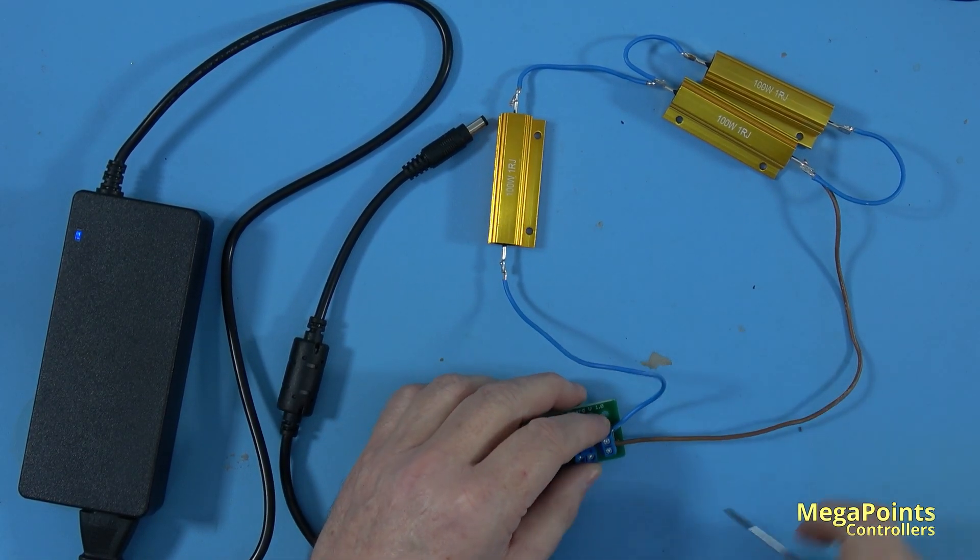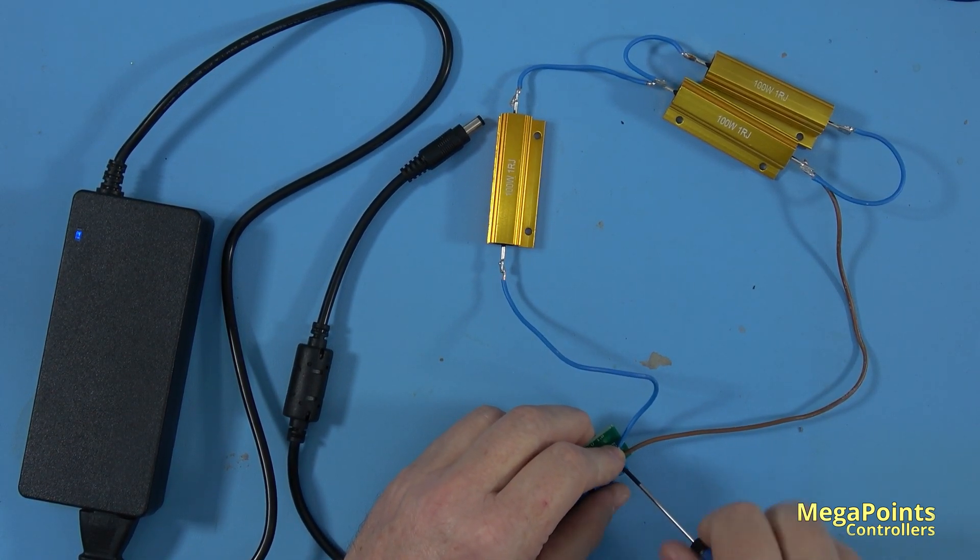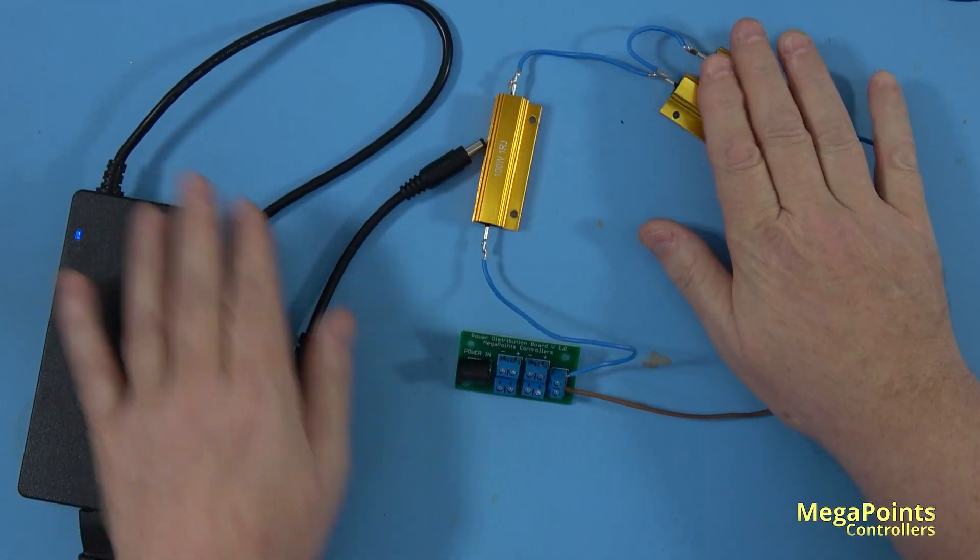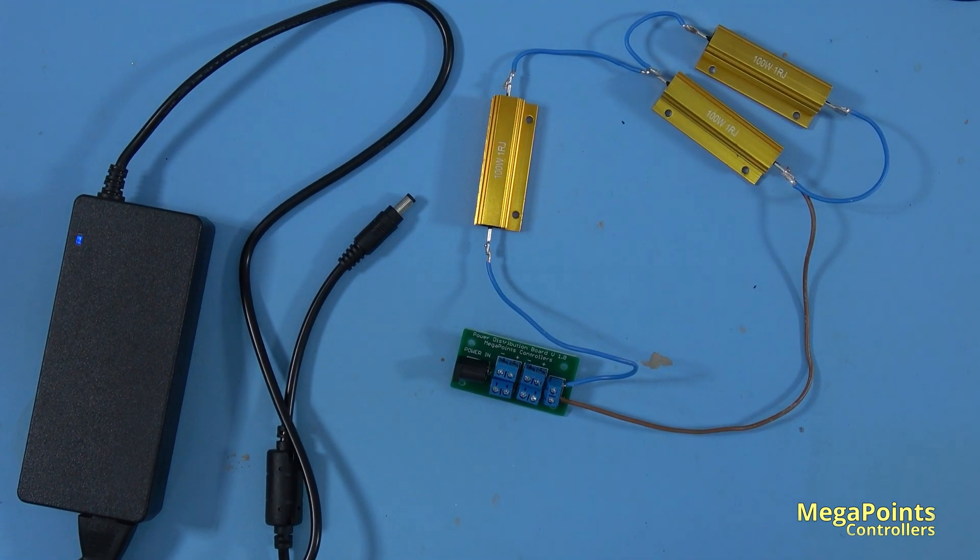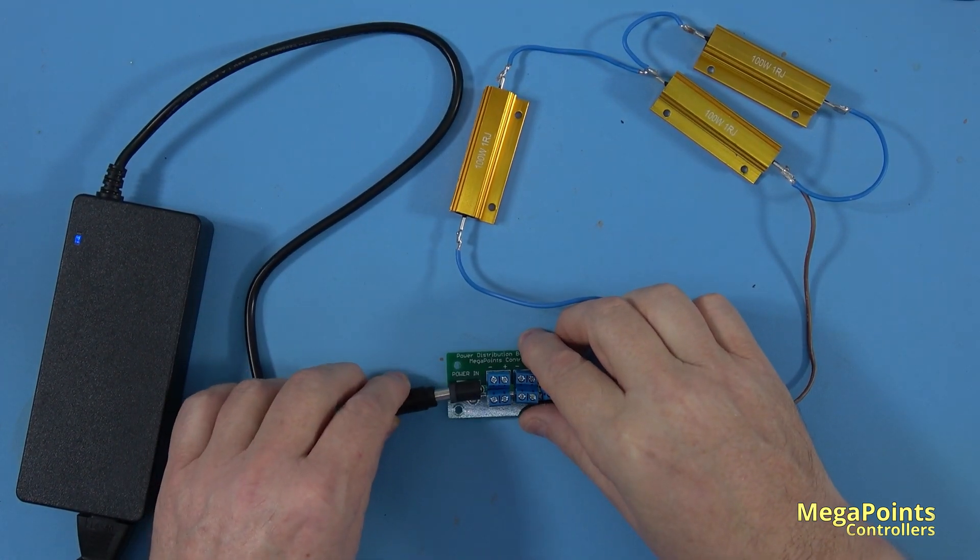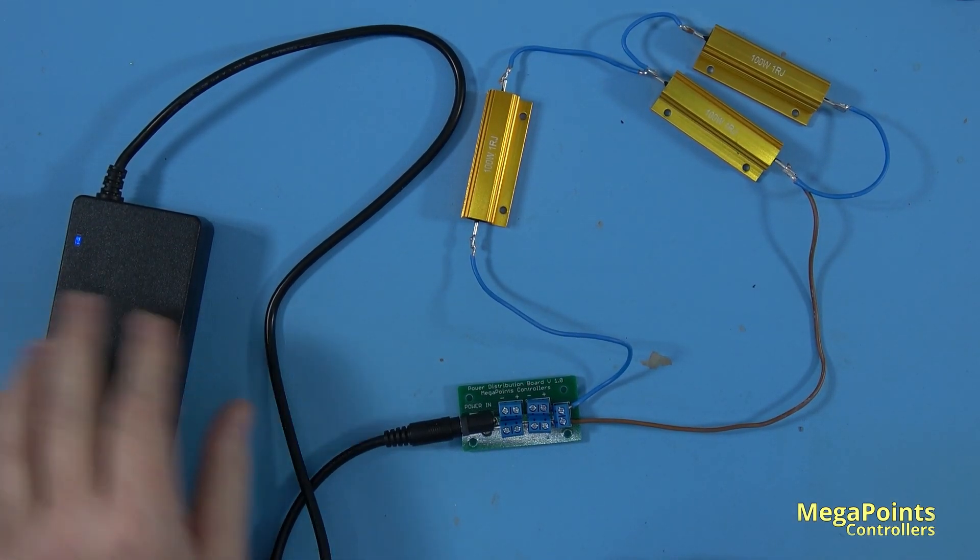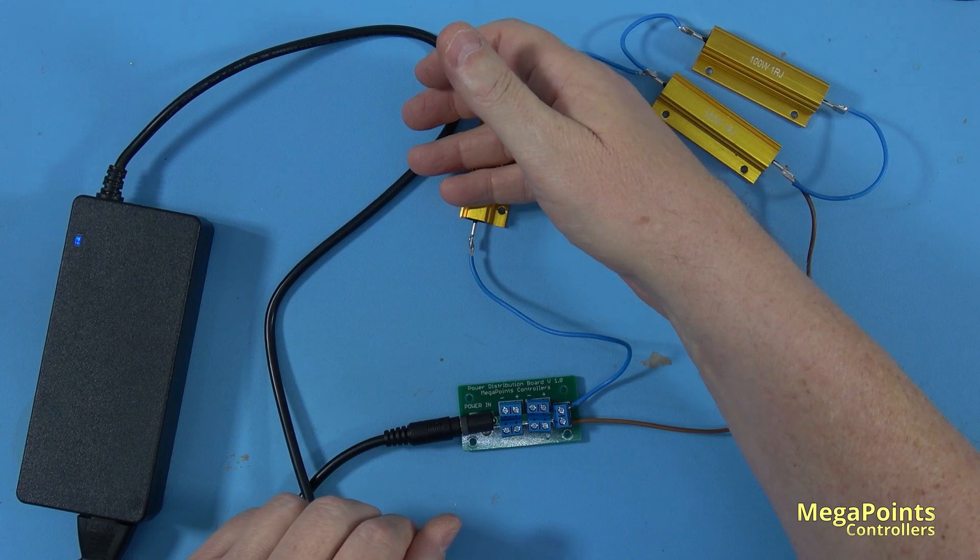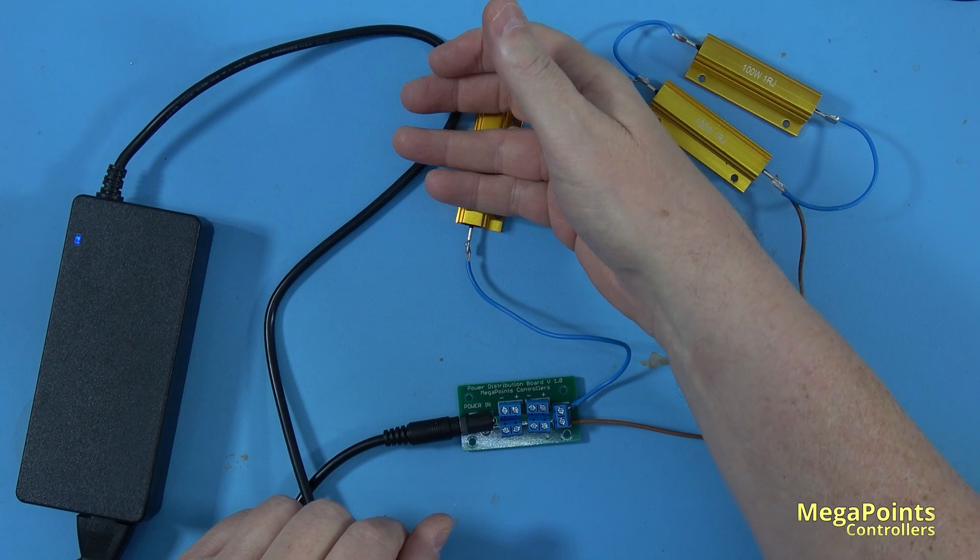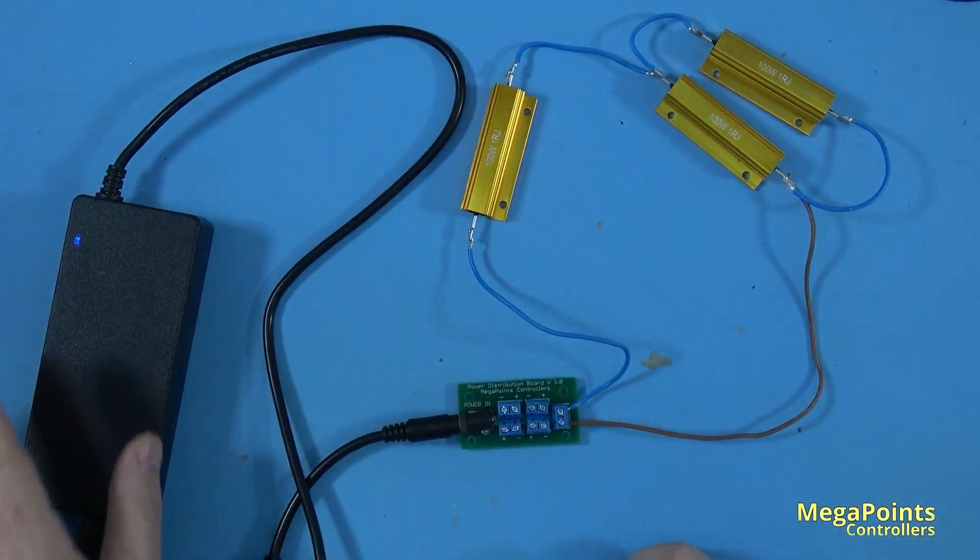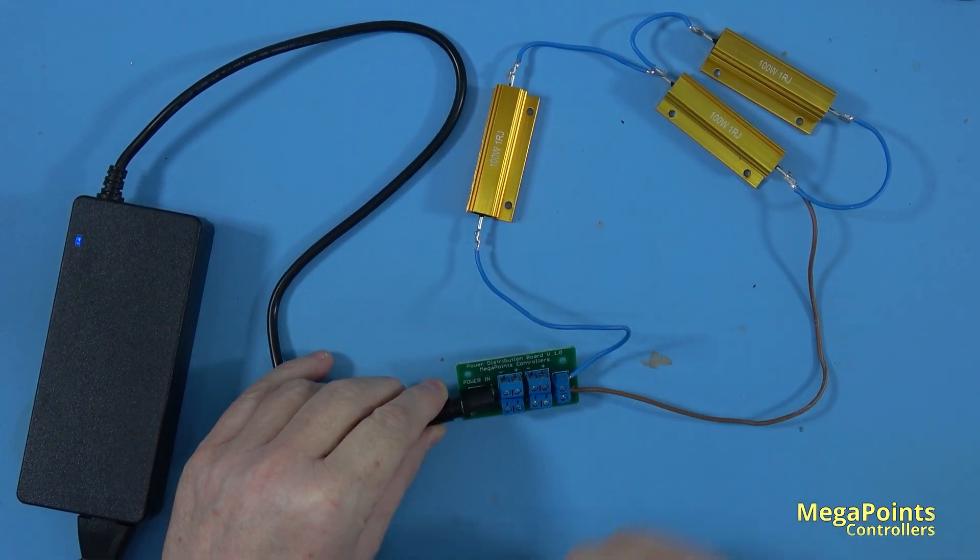When I connect the power supply, these should start to get warm, but nothing bad should happen. The power supply is now on full load. The light is still on showing it's operating, and these resistors are beginning to warm up. It's delivering a full load. Let's measure that and see what we get.